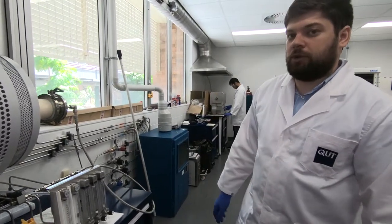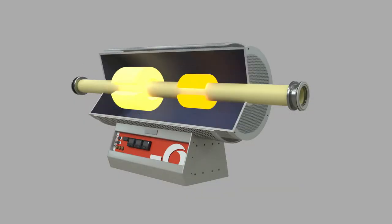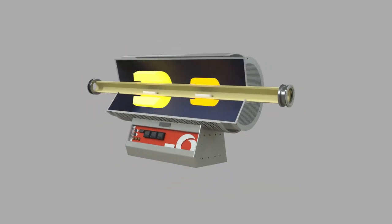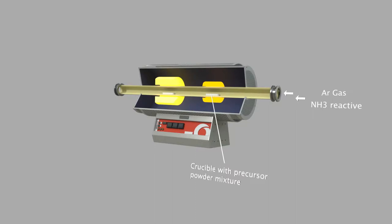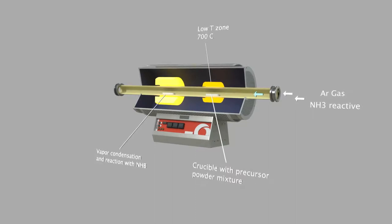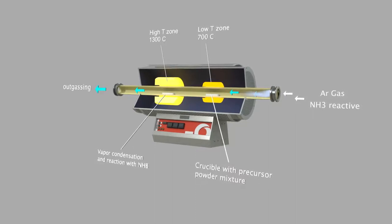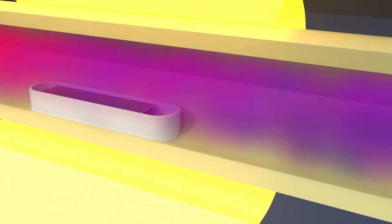So once the temperature will reach 1300 degrees, reaction will start. When the temperature inside the furnace at the low T-zone reaches 700 degrees, the powder mixture starts to produce a reactive vapor. This vapor travels through the furnace to the high T-zone where the temperature is 1300 degrees.